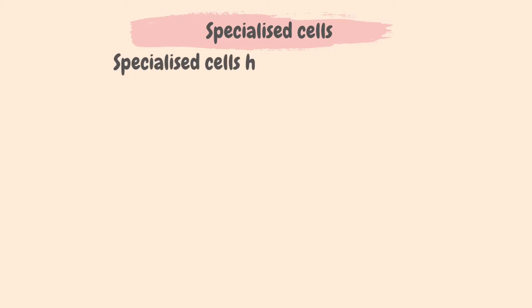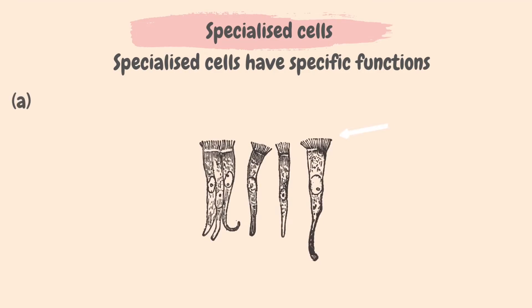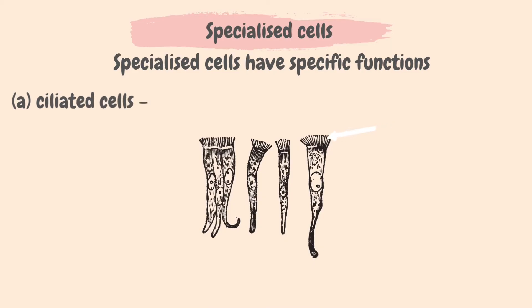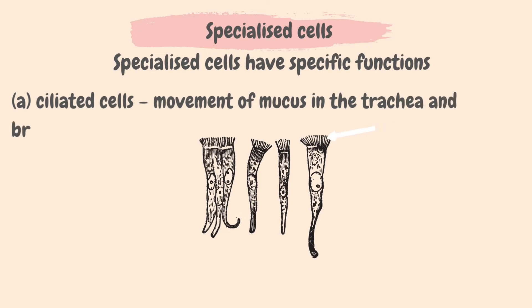In addition to the basic cell, an organism has specialized cells which have specific functions. Ciliated cells have cilia, or hair-like structures, which allow the movement of mucus in the trachea and bronchi. The cilia sweep mucus up the passages towards the nose and throat where it can be removed.